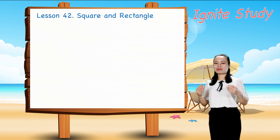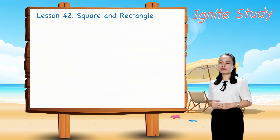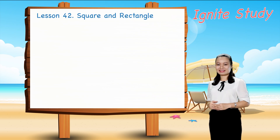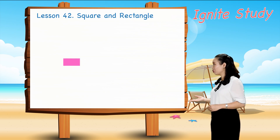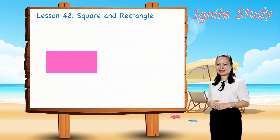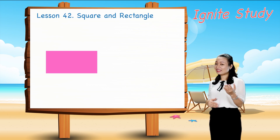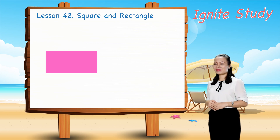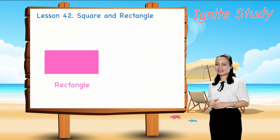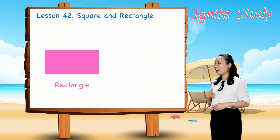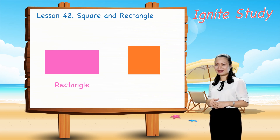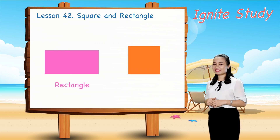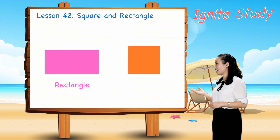Now let's have some practice. What shape is it? It's a rectangle. What shape is it? It's a square.